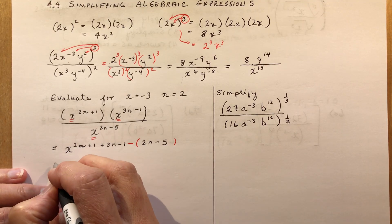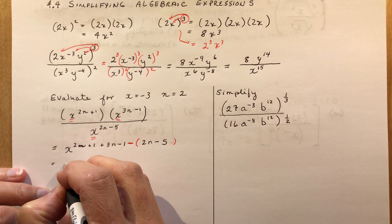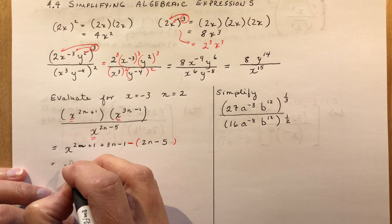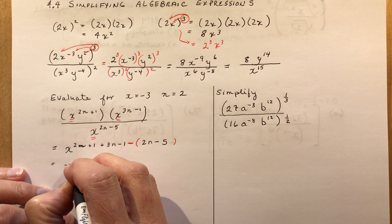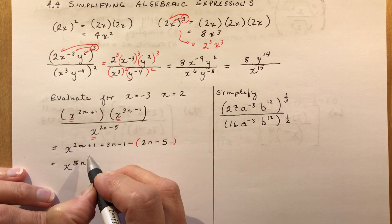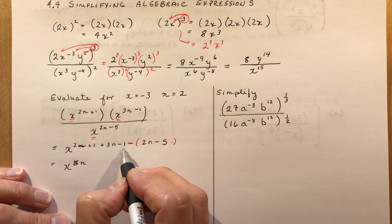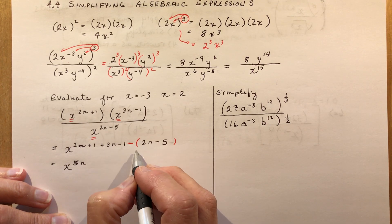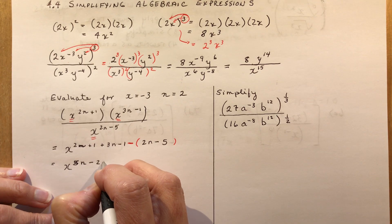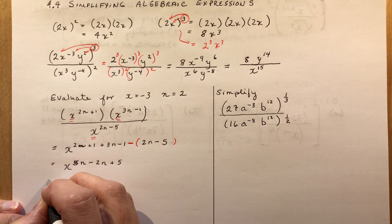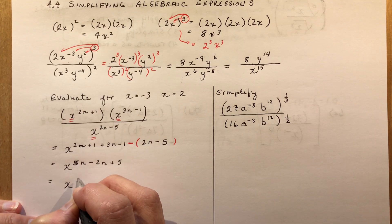So I have x to the 2n plus 3n, that's 5n. Sorry, x to the 5. This is why you don't use ink or pens. And plus 1 minus 1, well that's nothing. So I have 5n and I'm subtracting. So I'm going to do the minus part here now. Minus 2n plus 5. And that's going to be x to the 3n plus 5.